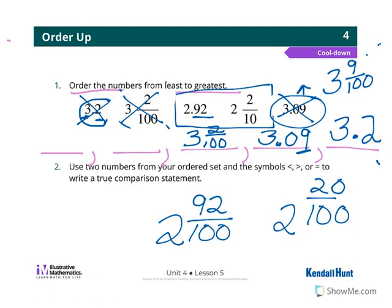So I'm going to go ahead and change 2 tenths to 20 hundredths because that's what we've been practicing for a couple weeks now. And just like in our warm-up today, you should be able to do that in your head now. Now I can think, okay, which is greater: 92 hundredths or 20 hundredths? Well, 92 hundredths. So this is our next biggest number, but it's written as a decimal, so I'm going to write 2.92.